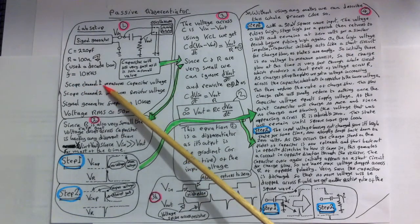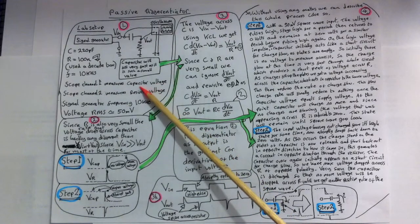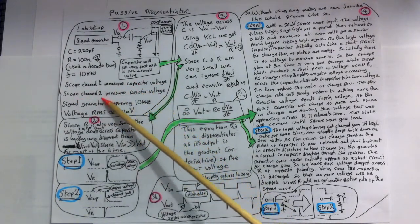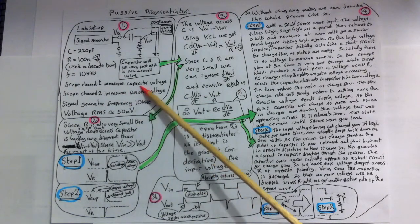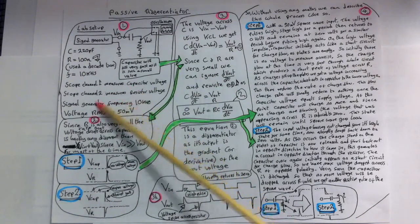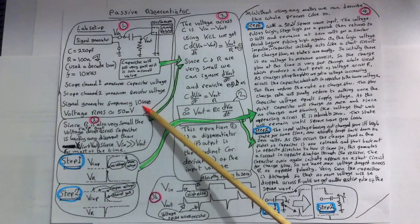Channel 1 of the oscilloscope will be measuring across the capacitor to get the capacitor voltage and the second channel will measure the voltage across the resistor. The signal generator is going to put out a frequency so this square wave is going to cycle at 10,000 Hz.